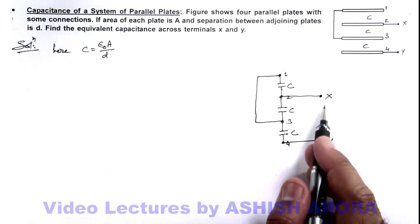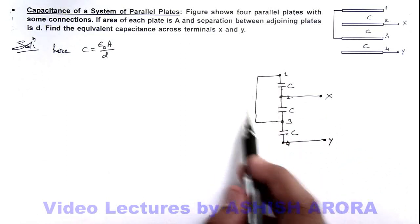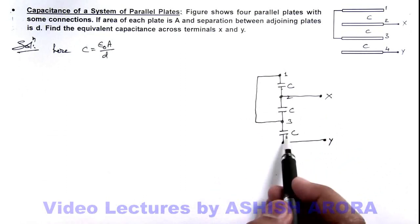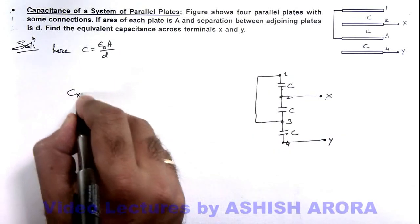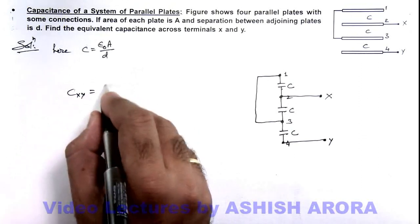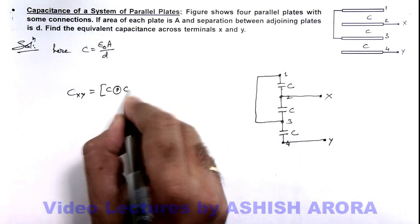Now here we can see this upper capacitor and this middle capacitor, they are connected in parallel, and this group is connected in series with this capacitor. So here we can write the value of Cxy is equal to the upper and the middle one c connected in parallel with this c.